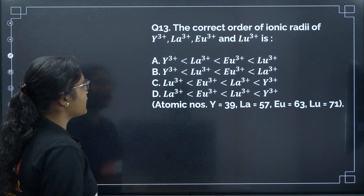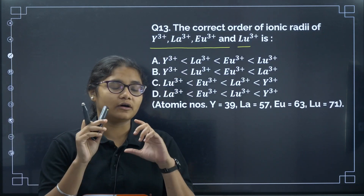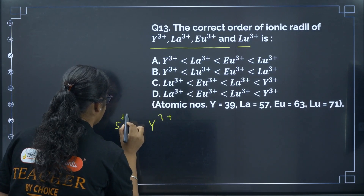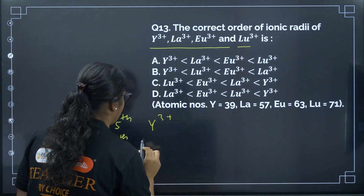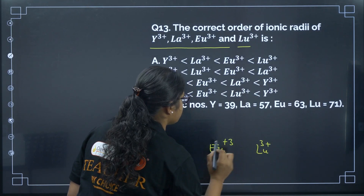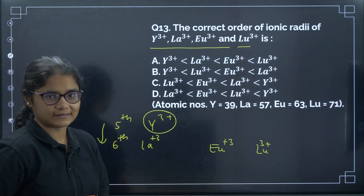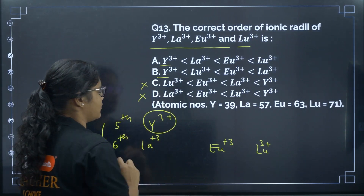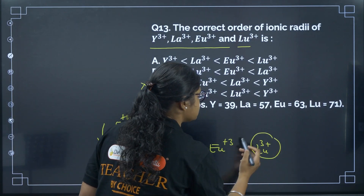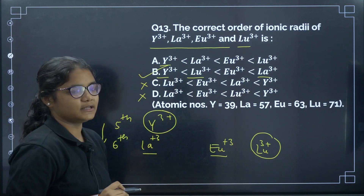Question 13: Arrange the correct order of ionic radii of Y³⁺, La³⁺, Eu³⁺, and Lu³⁺. Y³⁺ is from the fifth period so it is the smallest. In the sixth period, going from La³⁺ to Lu³⁺, size decreases due to lanthanide contraction. So the order is Y³⁺ < Lu³⁺ < Eu³⁺ < La³⁺. The correct answer is option B.